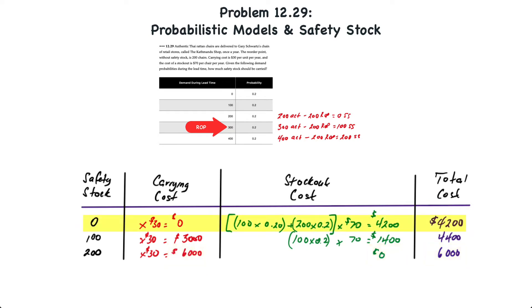Therefore in this problem the minimum total cost happens to be $4,200 at a zero level of safety stock. If you use this approach, you'll also notice that at zero safety stock there is zero carrying cost and at 200 units of safety stock there is zero stockout cost. That's how you apply probabilistic models to safety stock.